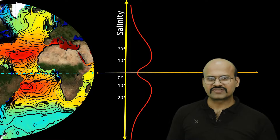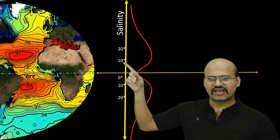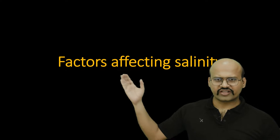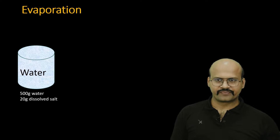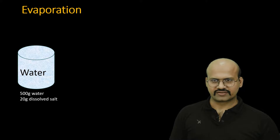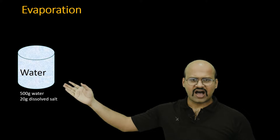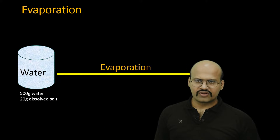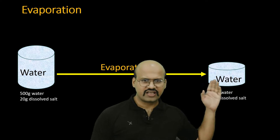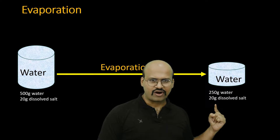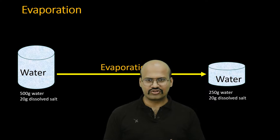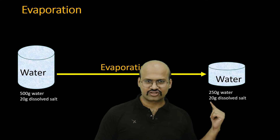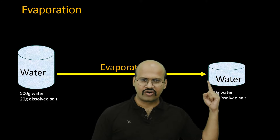Let's try to understand why maximum salinity is located between 10° and 20° north and south. The first and most important factor is evaporation. If we take 500 grams of water and dissolve 20 grams of salt in it, then if evaporation occurs, the amount of water is reduced but the amount of salt is not reduced — during evaporation, only water evaporates and salt is left behind. So the percentage concentration of salt will increase, and therefore salinity of this water will be higher.